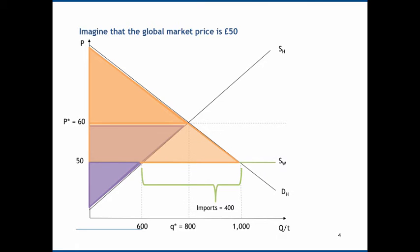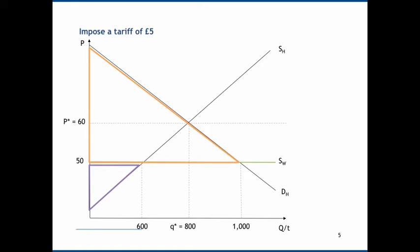Now let's look at some trade intervention. Imagine we want to favour domestic producers over consumers and impose a tariff of £5, making it more difficult for foreigners to compete. The imposition of a £5 tariff shifts the global supply curve upward so it now sits at price equals 55. At a price of 55, domestic suppliers are willing to supply 700 units, while quantity demanded falls from 1,000 down to 900 — found by plugging 55 into the supply and demand equations.